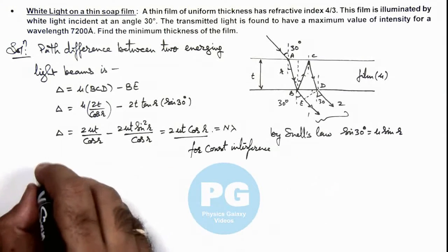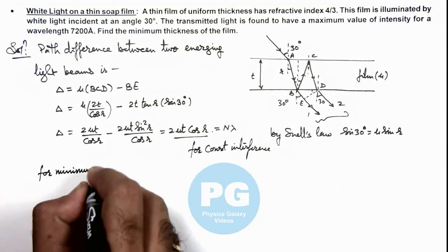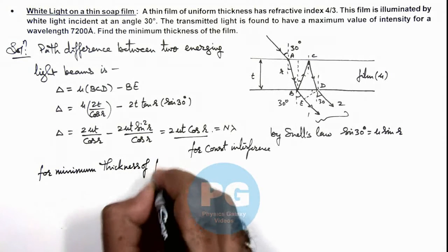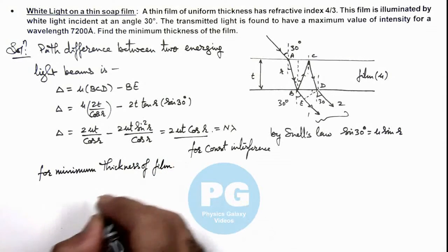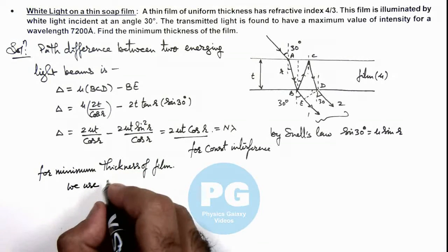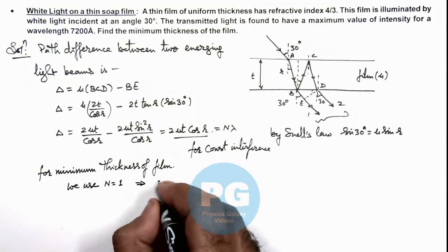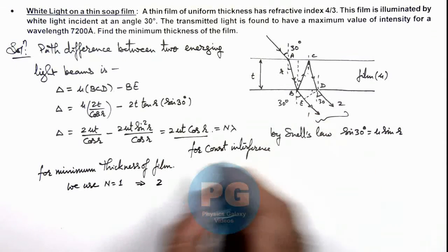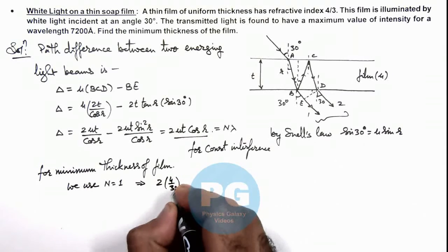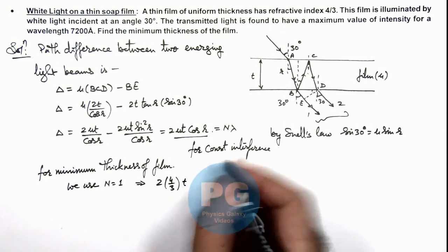So we can write for minimum thickness of film, we use n is equal to 1, which implies we are having 2 mu t. The value of mu we are given as 4/3, multiplied by thickness t which we are going to calculate.